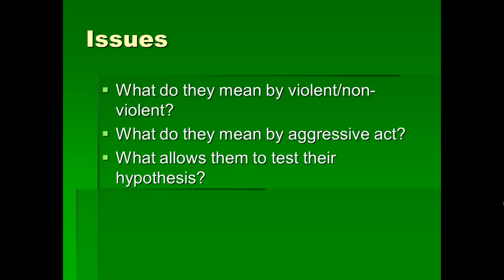So we really need to know what they mean by violent. Also, they're measuring aggressive acts. How are they measuring that? What do they mean by aggressive acts? And then also, what in their experiment will allow them to test their hypothesis? These are the issues that you would immediately think of, even if you don't know much about research methods.